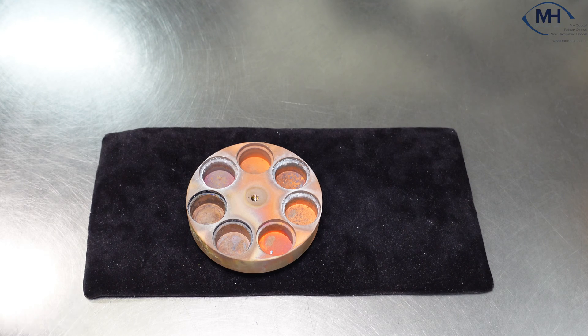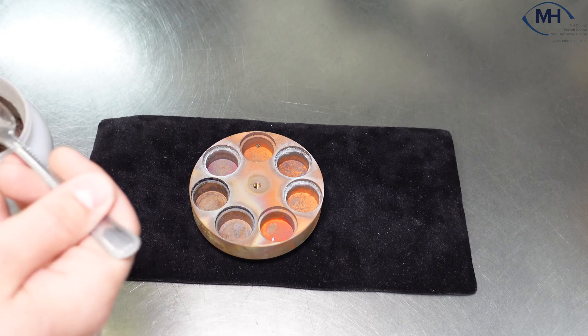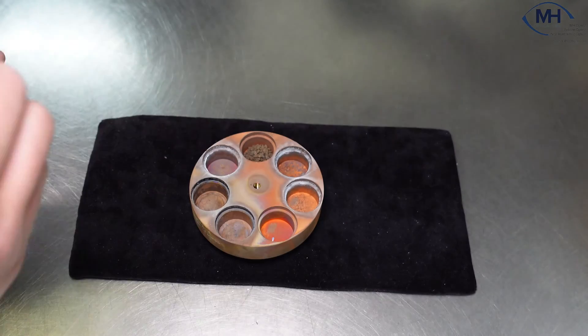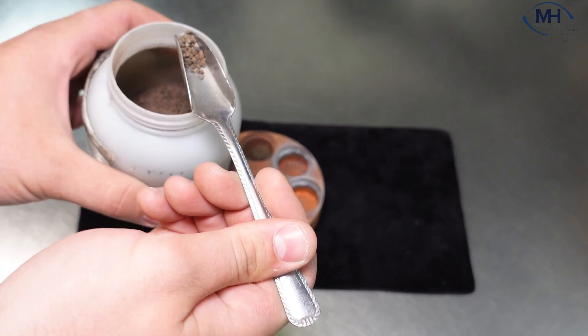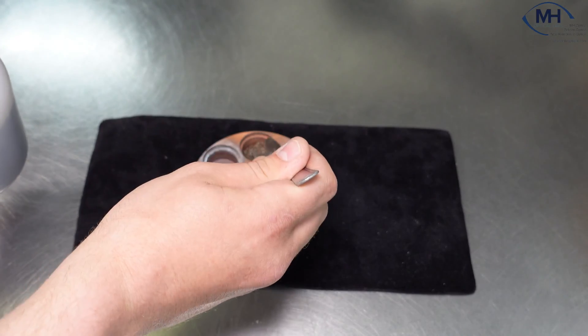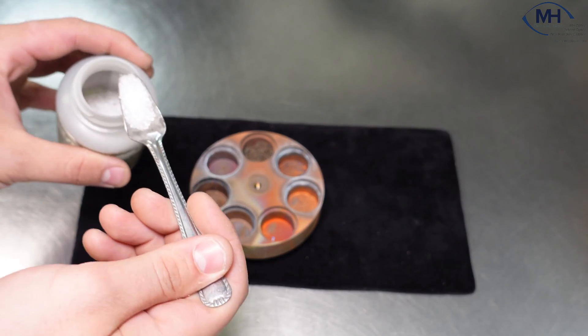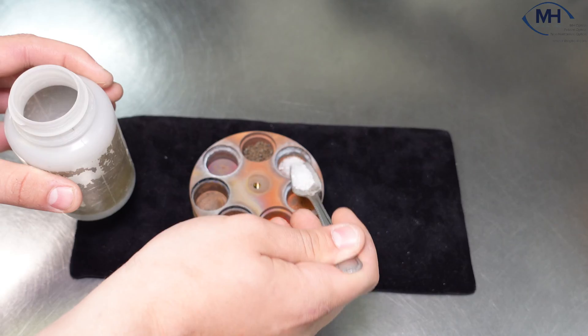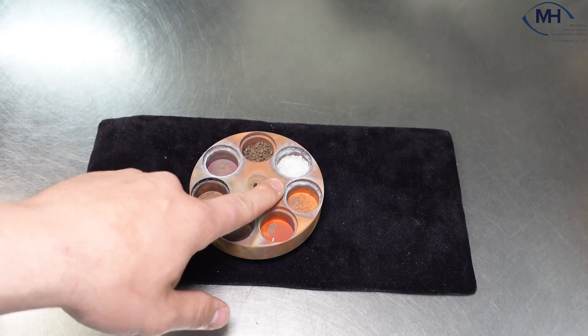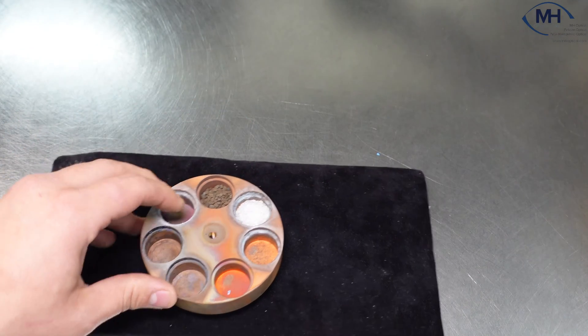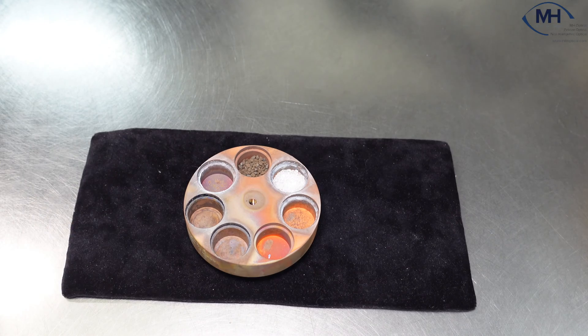First up is what we call our adhesion layer. This is a chromium silicone monoxide blend. It helps to adhere the rest of the stack to the lens. Next up is silicone dioxide. This is going to be found in almost every AR coating out there. It's actually quartz, and as I said before, almost every AR coating on the market is going to be burning silicone dioxide.